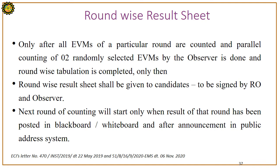Round-wise result sheet: Only after all EVMs of a particular round are counted, parallel counting of two randomly selected EVMs by the observer is done, and round-wise tabulation is completed, shall the round-wise result sheet be given to candidates, signed by the RO and observer. The next round of counting starts only after the result of that round has been posted on a blackboard or whiteboard and announced on the public address system.